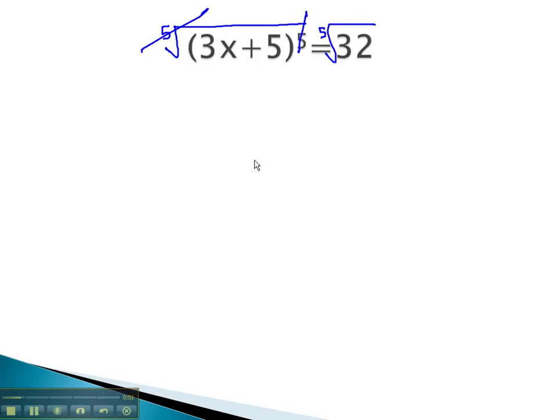Fifth power and fifth root are inverses, and this just leaves 3x plus 5 equals the fifth root of 32, which is 2.